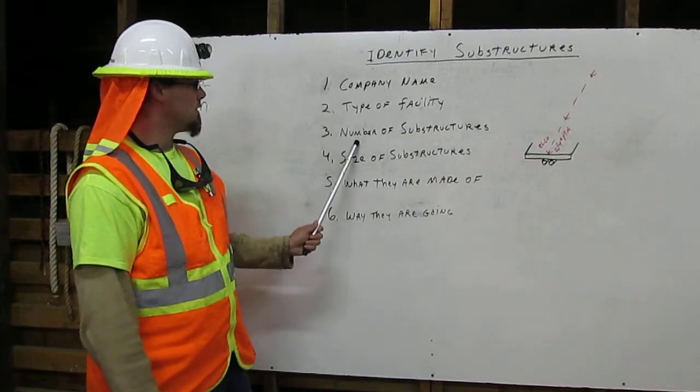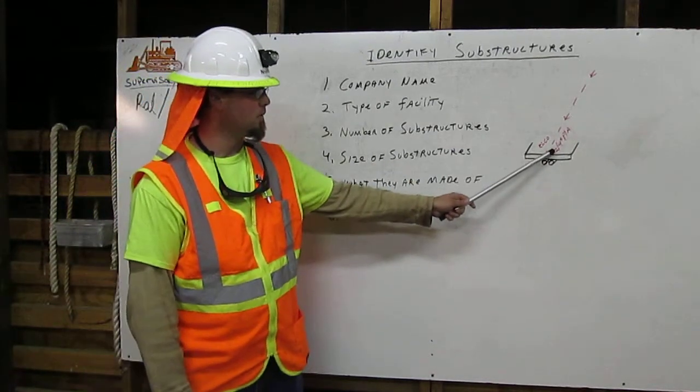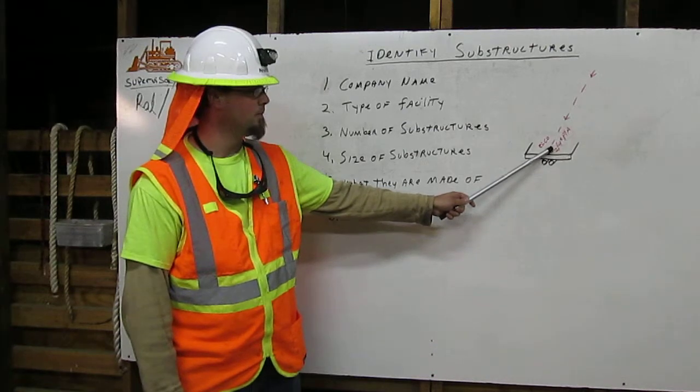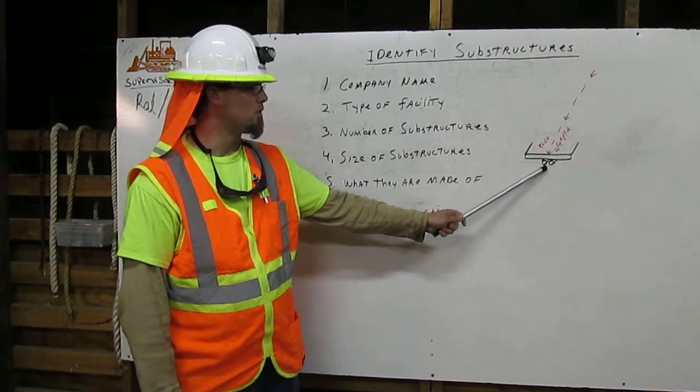Three, number of substructures. This first number, which is a two in this example, shows that we have two substructures.